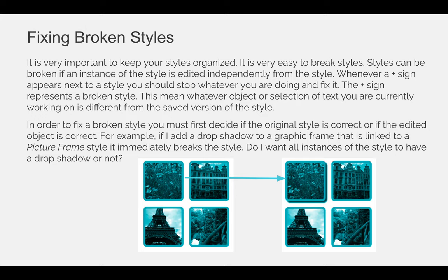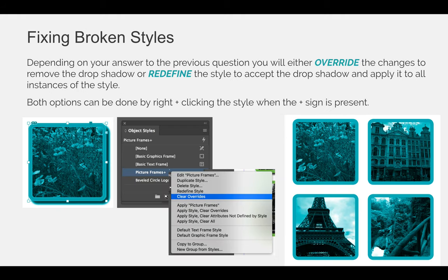In order to fix a broken style, you must first decide if the original style is correct or if the edited style is correct. For example, if I added a drop shadow to a graphic frame linked to a picture frame style, it immediately breaks the style. Do you want all instances of the style to have the drop shadow or not? Depending on your answer, you will either override the changes to remove the drop shadow or redefine the style to accept it.